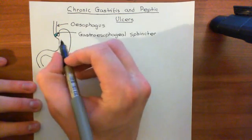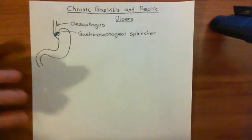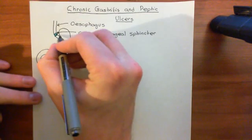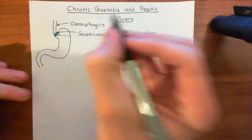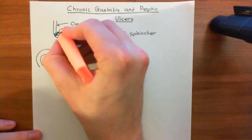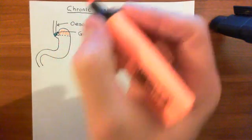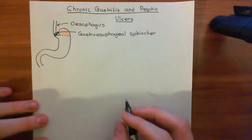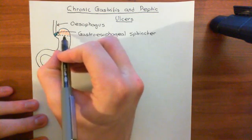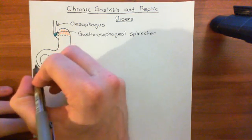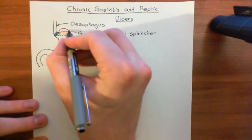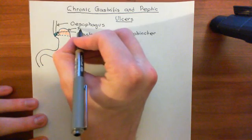Now we're into the stomach, which is divided up into four main portions. Let's start off with the fundus — this portion right at the top. Fundus means the portion that is furthest away from the entrance. You might think this is close to the esophagus, but we're referring to the pyloric sphincter down into the duodenum as the entrance, so the fundus is the portion furthest away from the pylorus.